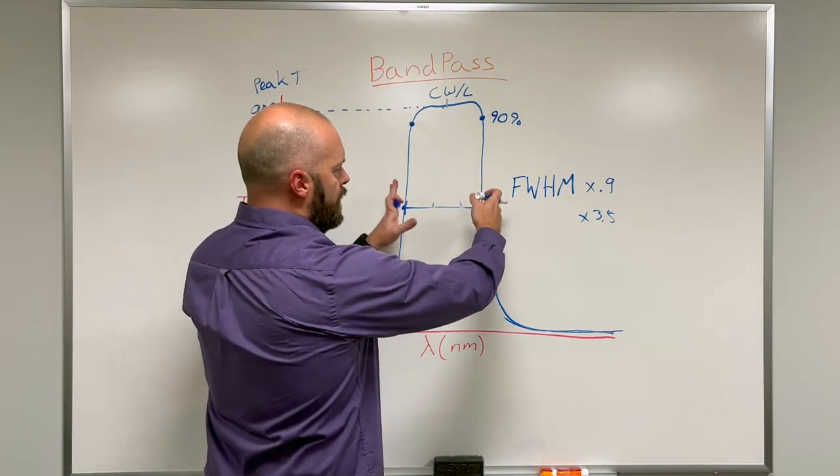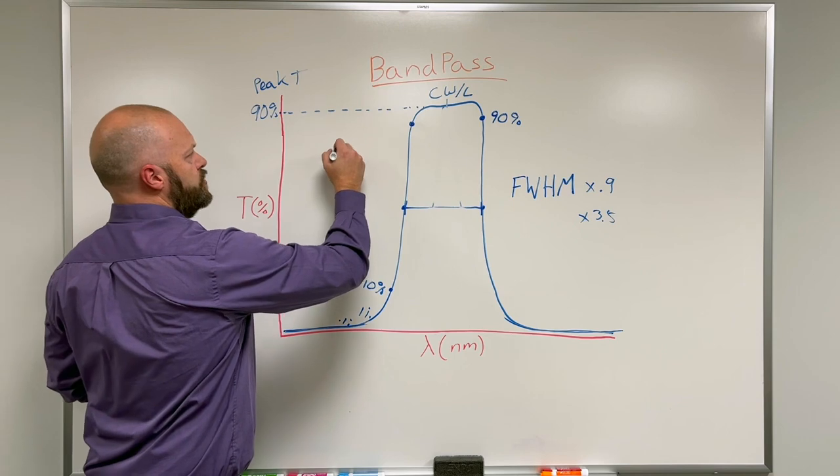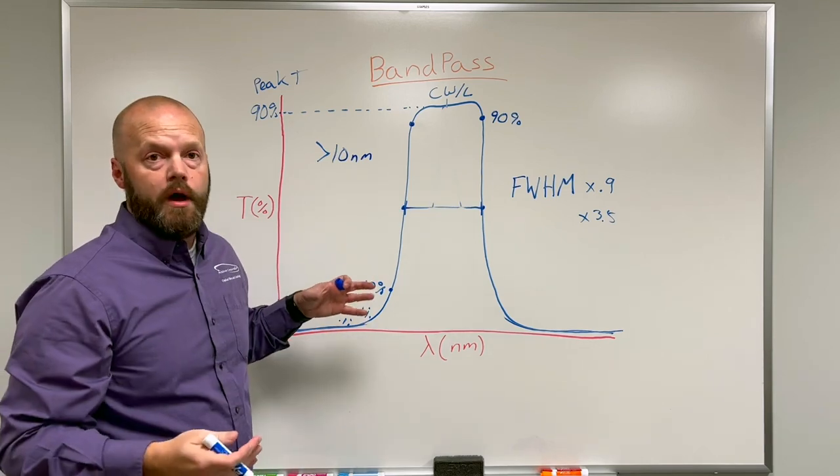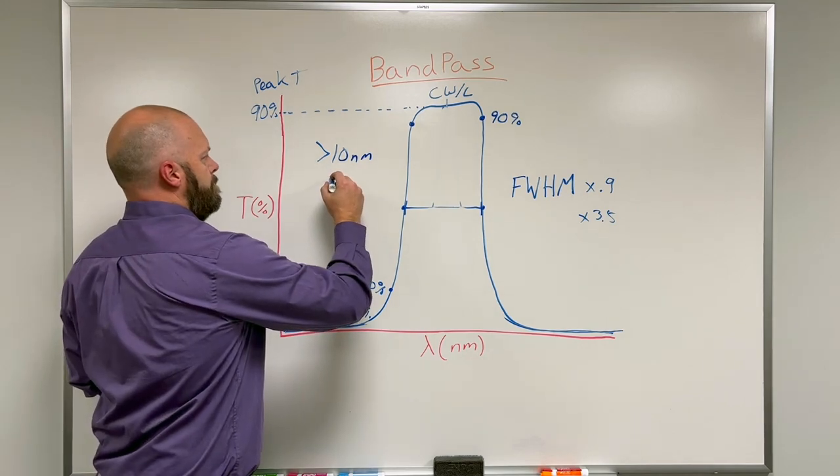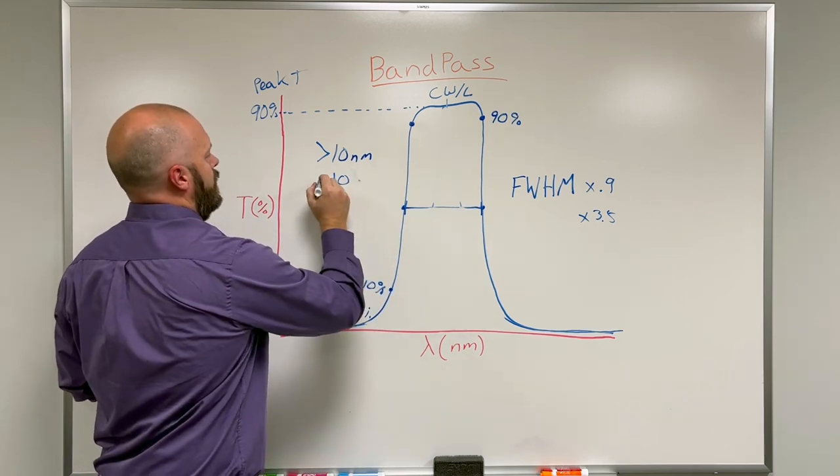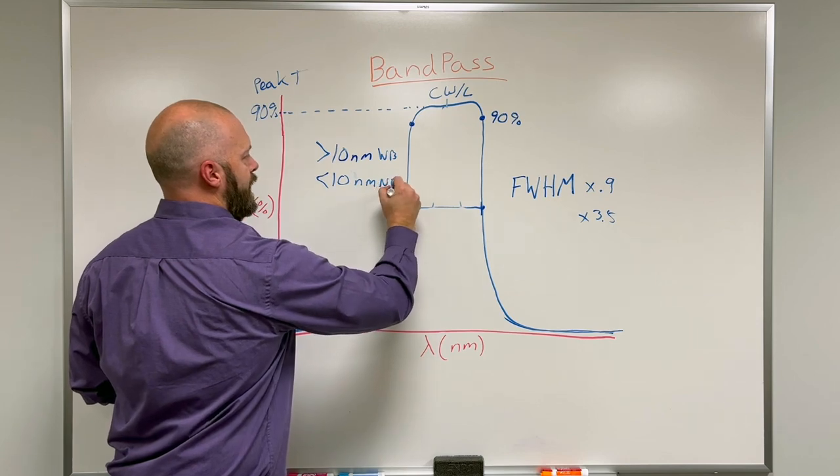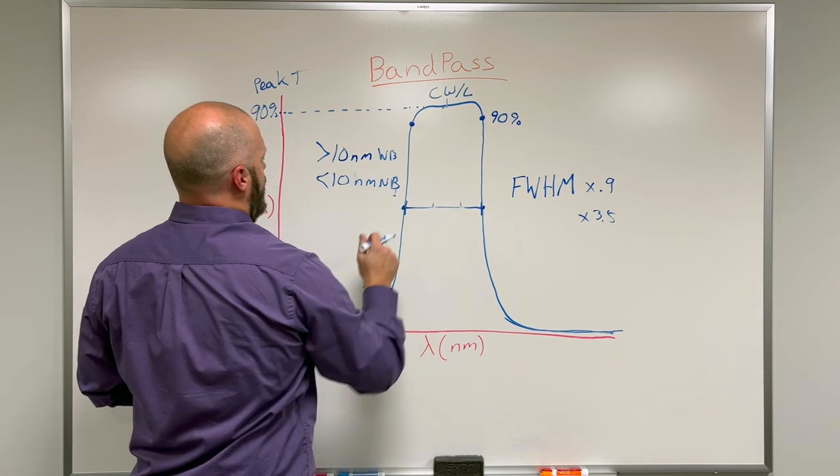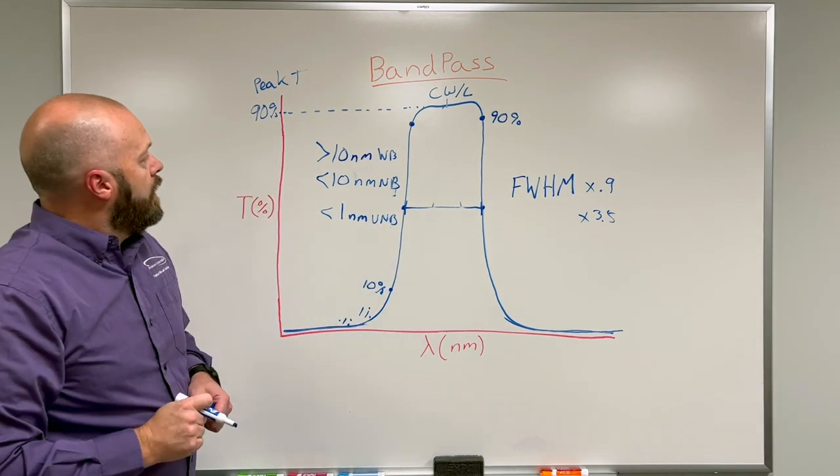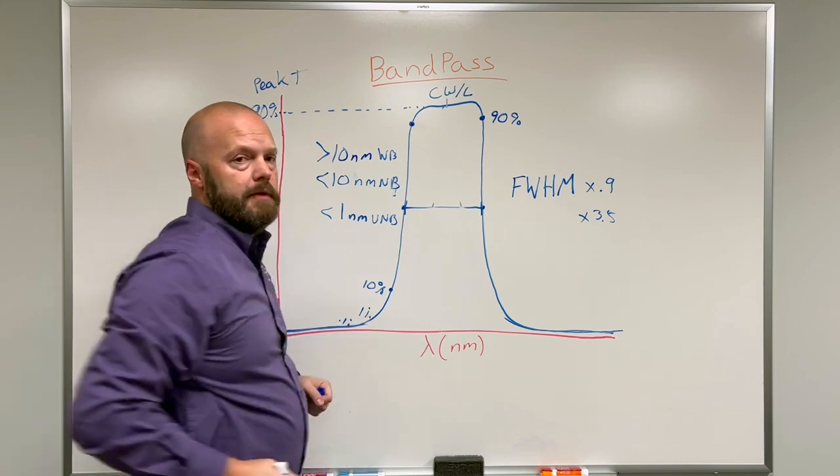Now this full width half max has certain categories. You have wide band, which could be anywhere from usually 10 nanometers or greater, even as much as a thousand nanometers wide. Anywhere from lower than 10 is considered narrow band. Then you even have, we're going to say one nanometer or less, we're going to call those ultra narrow bands. The one through six cavity designs can fit into this realm depending on what you want for your steep edges and your wavelength.